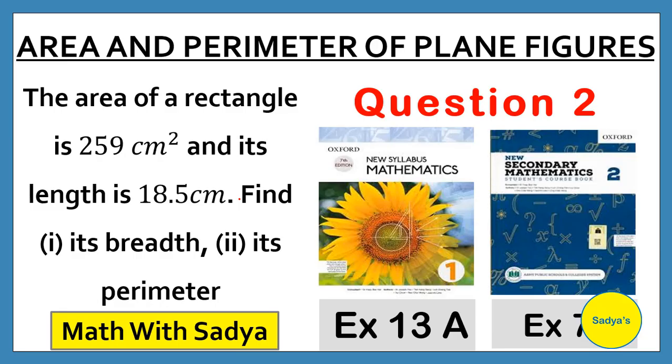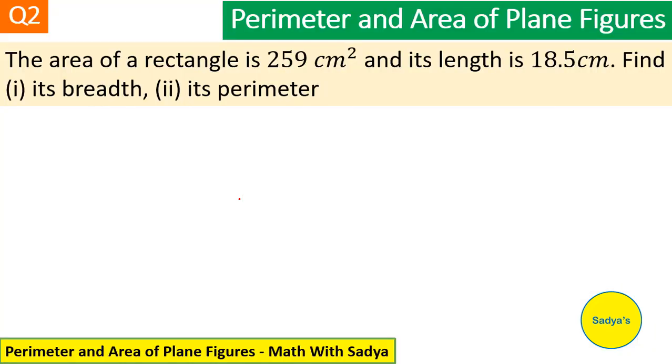Hello. In this video, we solve question number 2 of exercise 13a New Stabilis Mathematics or exercise 7a of New Secondary Mathematics. The question is, the area of a rectangle is 259 cm square and its length is 18.5 cm. Find, first part, its breadth and second part, its perimeter.